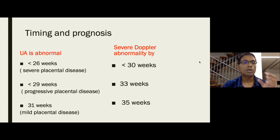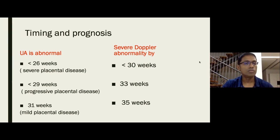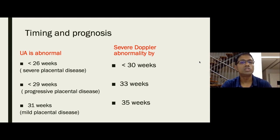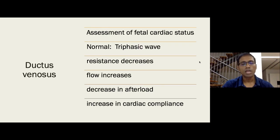The umbilical artery also has utility in counseling. If you see increased resistance in the umbilical artery with growth restriction starting before 26 weeks — severe placental disease — this baby will likely require delivery by around 30 weeks. Resistance starting between 26 and 29 weeks gives a good chance of reaching 33 weeks. Starting at 31 weeks or later is mild placental disease, with a good chance of reaching 35 weeks. These numbers are essential for counseling parents.